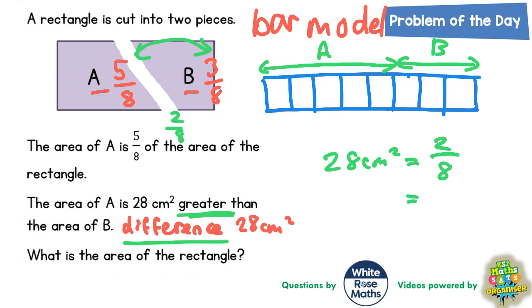Now if two-eighths is 28 centimeters squared, one-eighth is half of that. So one-eighth must be half of 28 and half of 28 is 14 centimeters squared. So one-eighth is worth 14 centimeters squared. So I could just write that on, 14. One-eighth is worth 14. But remember all the eighths are the same size. So all of the eighths are worth 14 too.